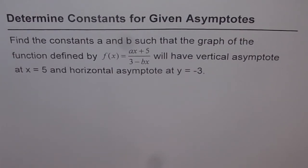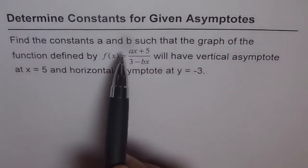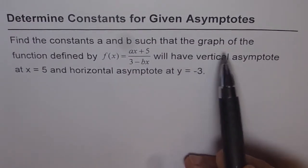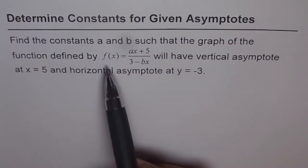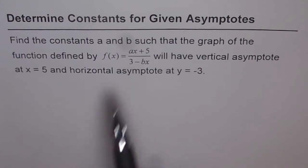Here is a very easy solution for a thinking problem. The question here is: determine constants for given asymptotes. Find the constants a and b such that the graph of the function defined by f(x) equals ax plus 5 divided by 3 minus bx will have vertical asymptote at x equals 5 and horizontal asymptote at y equals minus 3.